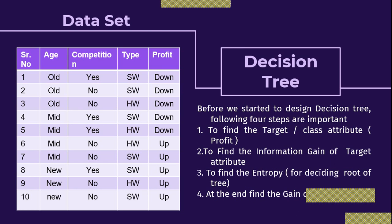The first step is to find the target attribute or class attribute. The second step is to find the information gain of the target attribute. The third step is to find the entropy, which is used to decide the root of the tree. At the end, find the gain of each remaining attribute. In our example the three attributes are age, competition, and type, while profit is the target attribute — so we find information gain for profit and gain for the others.